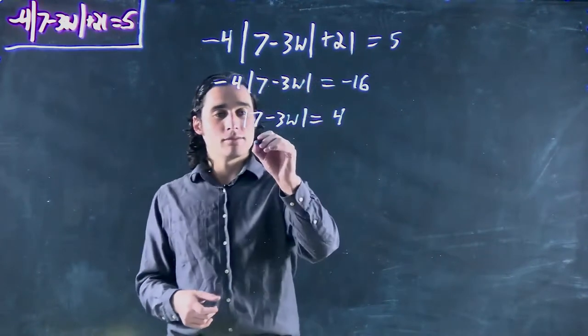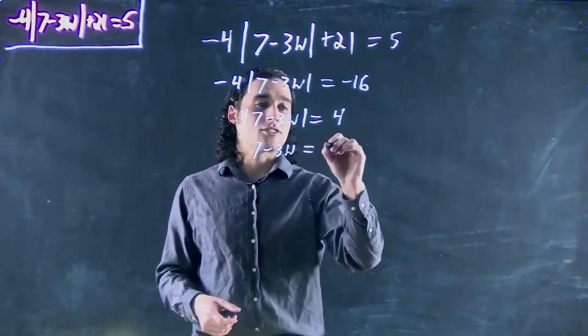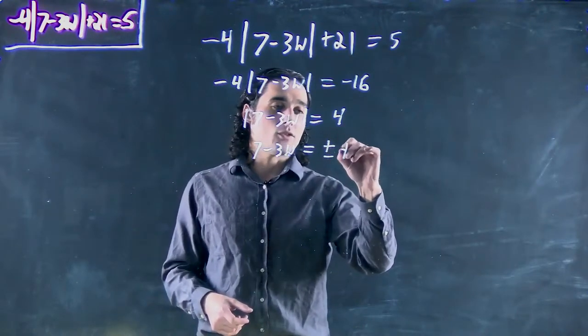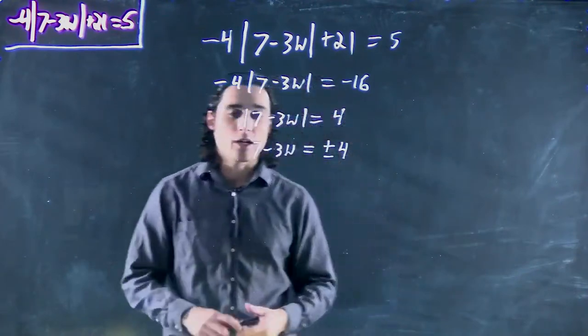And remember, what does that mean? When you get rid of it, we get a plus and minus answer on the other side. Plus or minus 4. We can also write 4 and -4, but we then have to evaluate both.